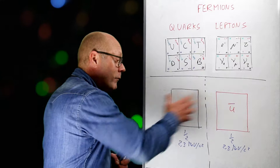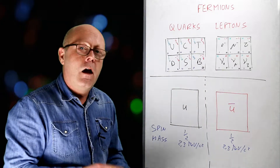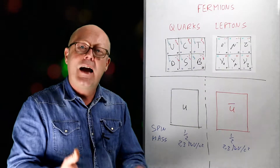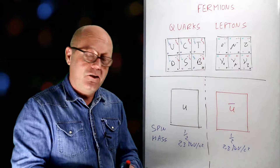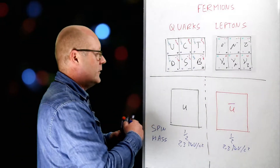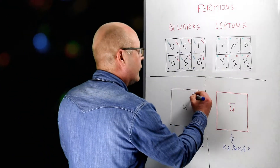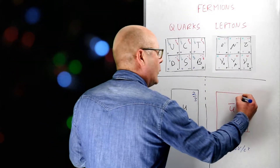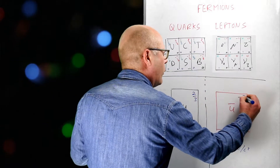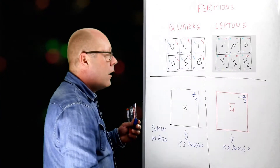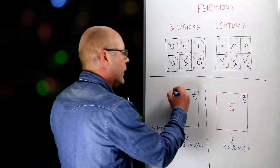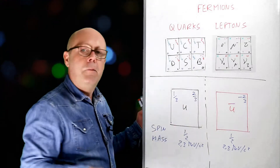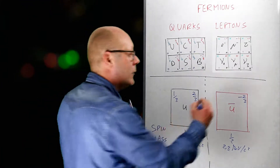But the other characteristics will change. The magnitudes will stay the same, but the sign will change. So for the up quark, for instance, we have an electric charge of 2/3, whereas for the anti-up it will be minus 2/3. The baryon number of the up is 1/3; for the anti-up it will be minus 1/3.